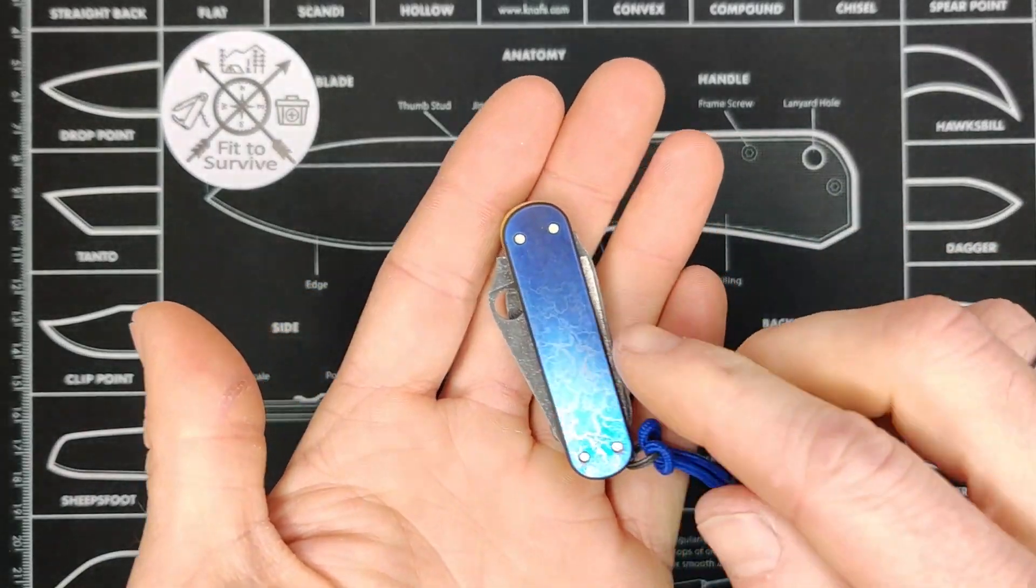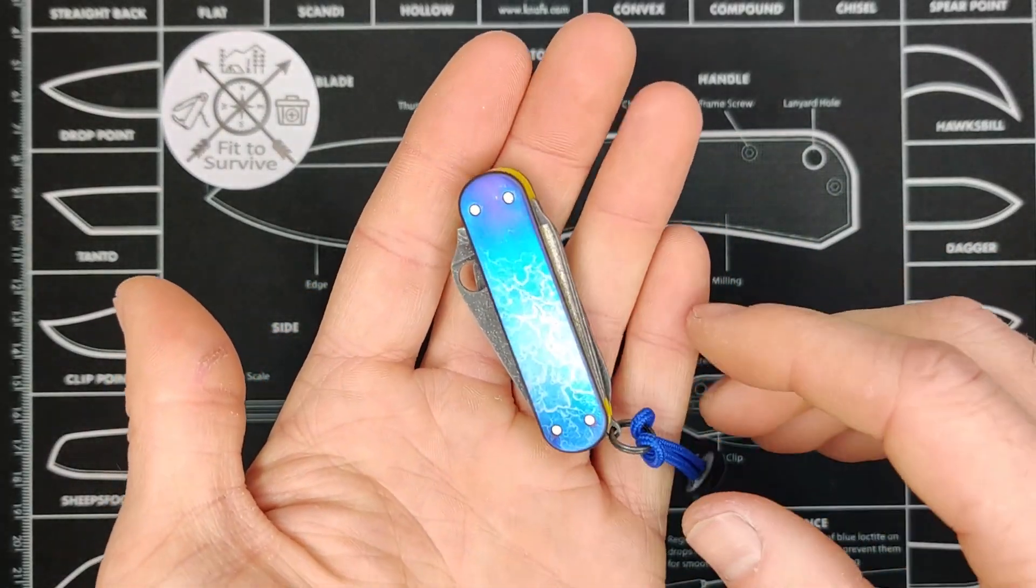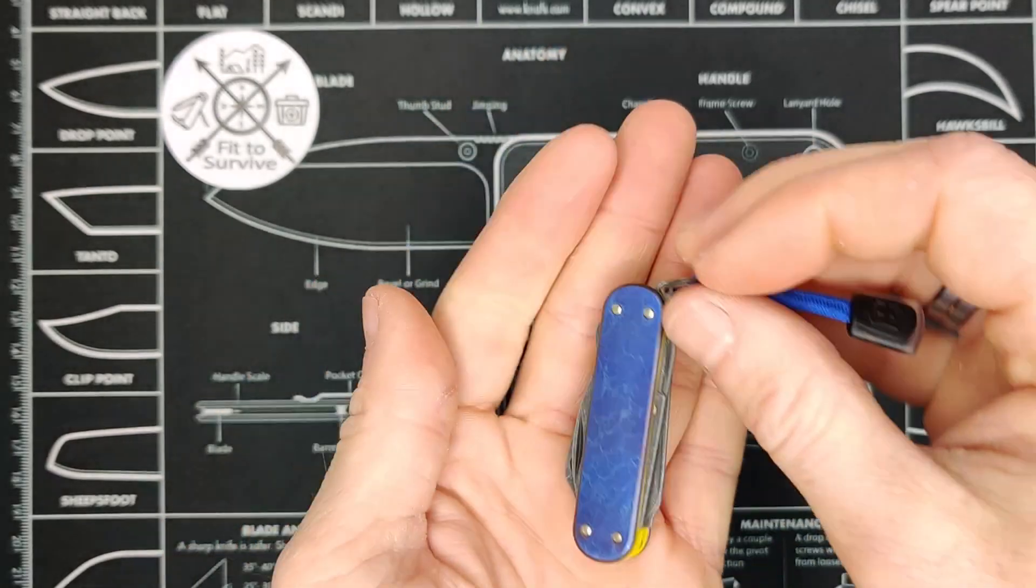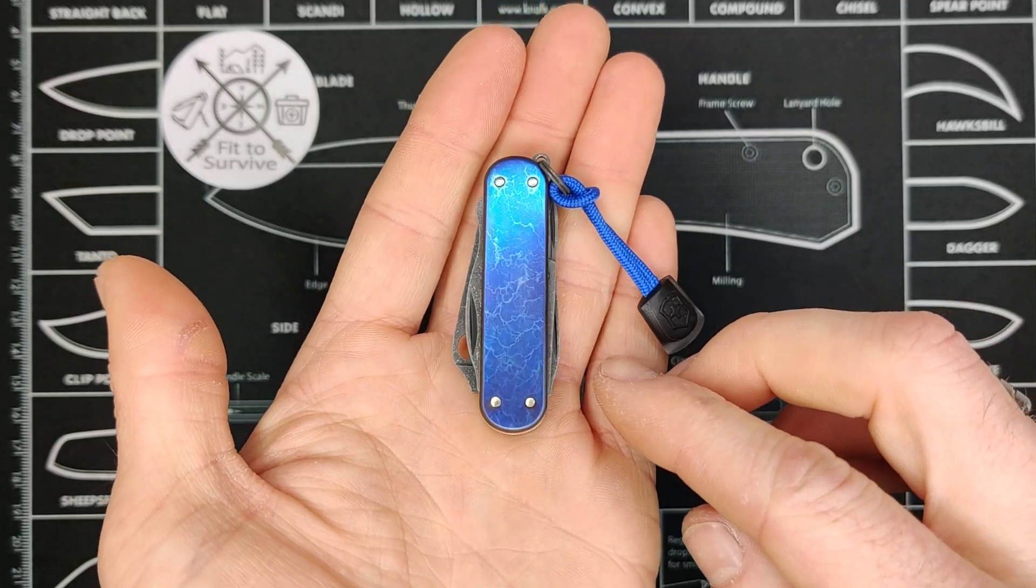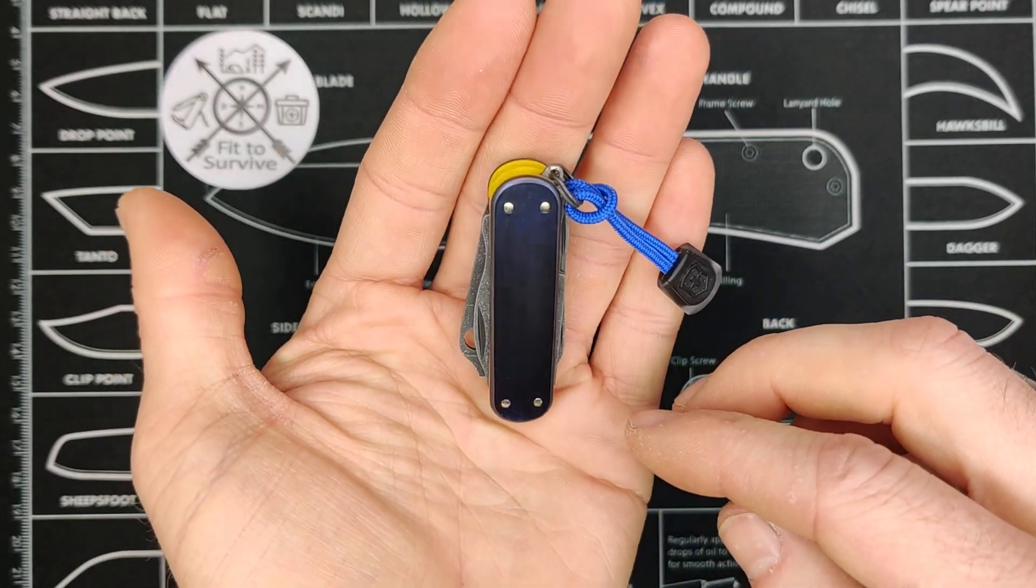All right, so first thing is the scales. You can see a really unique pattern on them. This is titanium, and I flamed it and dipped it into acid. It gives it this really cool pattern.